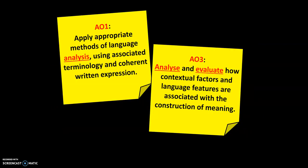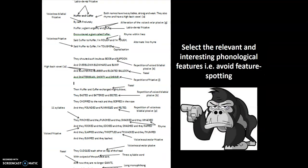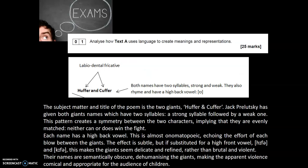But that isn't enough — it's not just about spotting things. It's about considering, analysing and evaluating how those language features construct meaning in different contexts. For example, in the context of this text — 'Huffer and Cuffer', a children's nonsense poem about two giants having a fight — we would explore how the phonological choices that the writer has made have been used to create the meanings and representations: how the giants are represented, how their actions are represented. We practice deploying that technical vocabulary, labelling the different features, then considering how they create those meanings and representations.